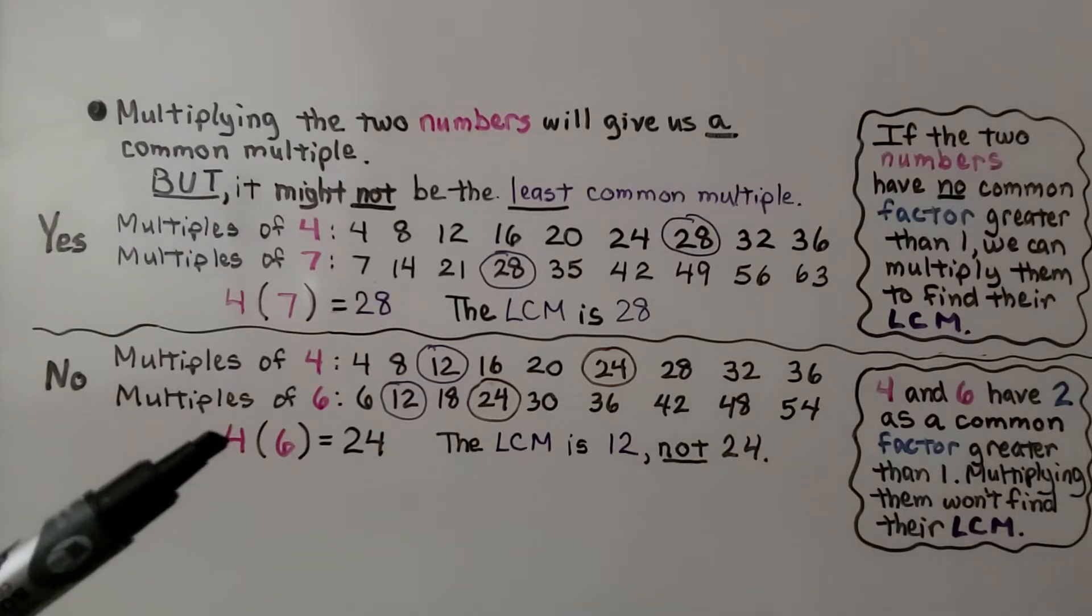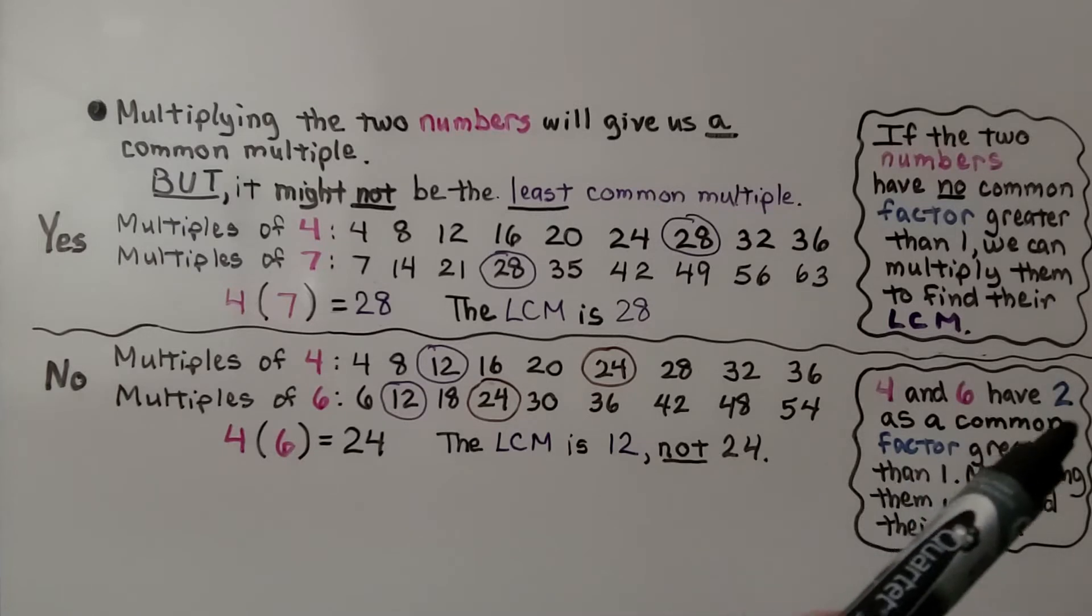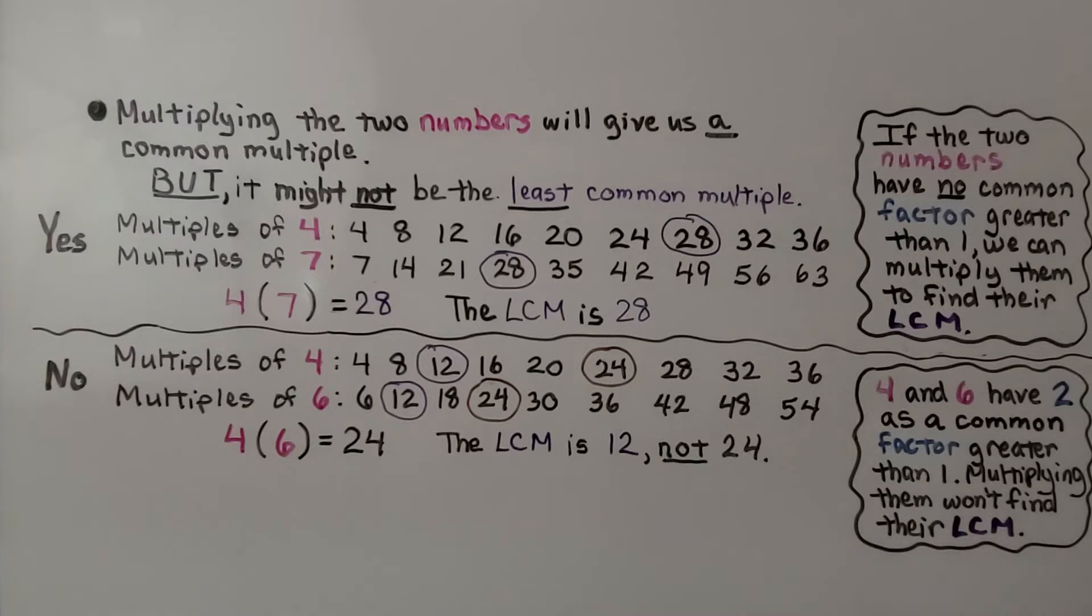It didn't work for 4 and 6 because they do have a common factor greater than 1. They have 2 because 2 times 2 is 4 and 2 times 3 is 6. So they have 2 as a common factor.